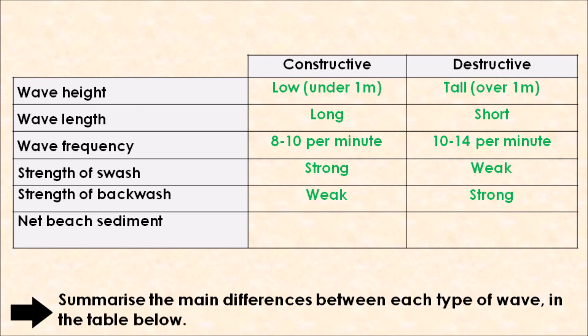Finally, net beach sediment refers to the amount of sediment present on the coastline, and that net beach sediment can either increase or decrease. When it comes to constructive waves, because they construct and build up beaches due to deposition occurring from that strong swash and weak backwash, net beach sediment will increase. In comparison, a destructive wave, because of its really strong backwash, will have net beach sediment which decreases due to erosion taking place.